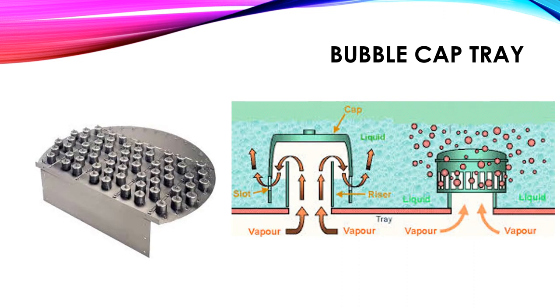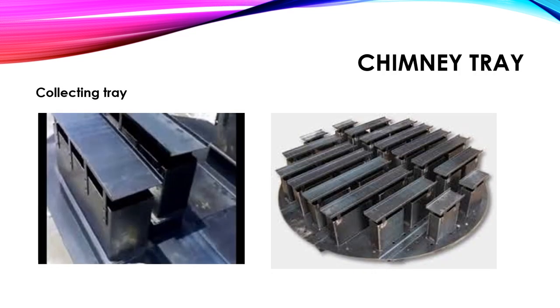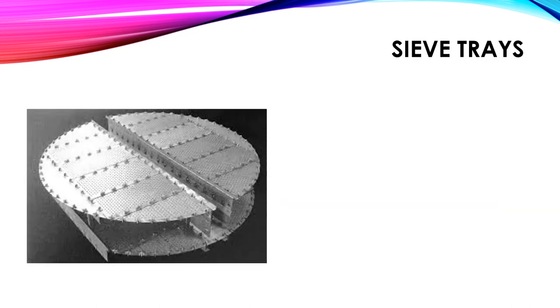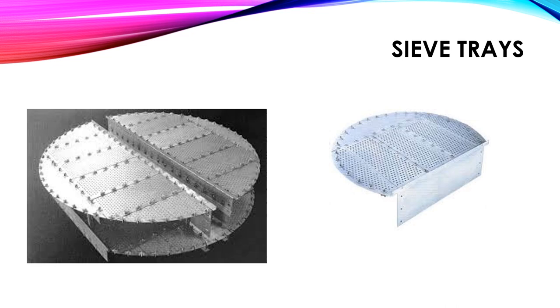These are bubble cap trays. These are chimney trays. Normally in a distillation column, chimney trays are used as a collecting tray. These are sieve trays.